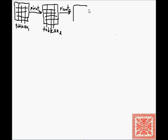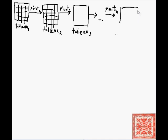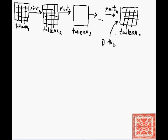Once we have the second tableau, we again apply the pivoting operation to generate the third tableau. We continue to choose a pivot and continue generating tableaus until we get to the end — and there will be an end. Some final tableau, some final two-dimensional matrix, Tableau N. Once we get to that matrix, either it will give us a solution to the linear programming problem we are trying to solve, or there will be no solution.